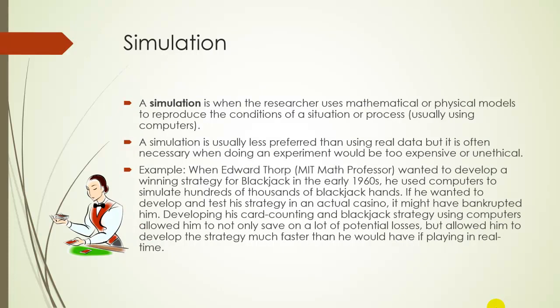Another type of study is called a simulation. A simulation is when the researcher uses mathematical or physical models to reproduce the conditions of a situation or process — usually involving computers, though you could use dice or something else. A simulation is usually less preferred than using real data, but it's often necessary when doing an experiment would be too expensive or simply not ethical. For example, when Edward Thorpe, an MIT math professor, wanted to develop a winning blackjack strategy in the early 1960s, he used computers to simulate hundreds of thousands of hands of blackjack. Doing it in an actual casino probably would have bankrupted him since he was still developing the strategy and didn't know what was right and wrong — it's much safer to make a mistake on a computer than in a real casino.